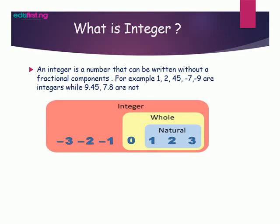Now, what is an integer? An integer is a number that can be written without a fractional component. For example, 1, 2, 45, minus 7, and minus 9 are integers, while 9.55 and 3-point-something are not integers.